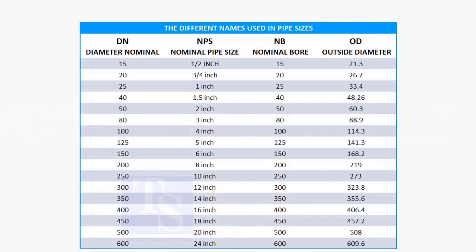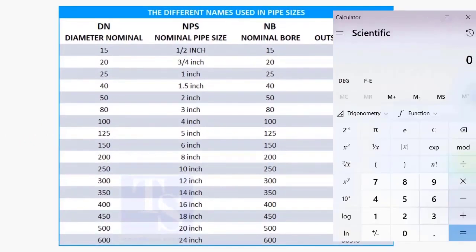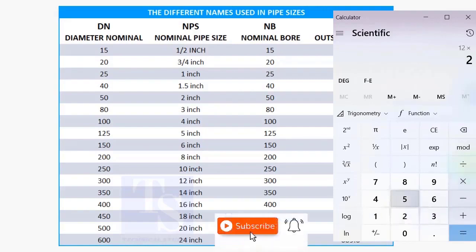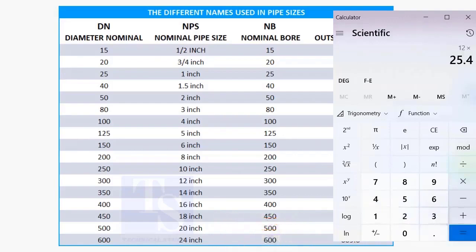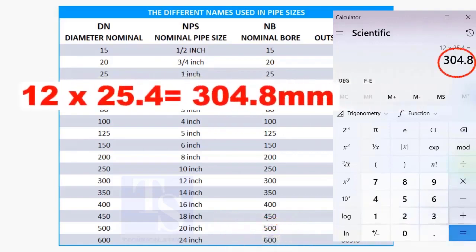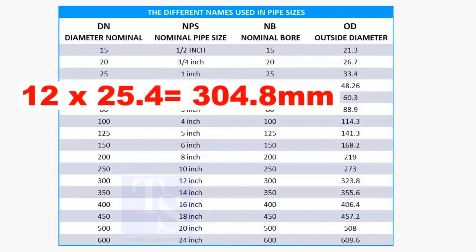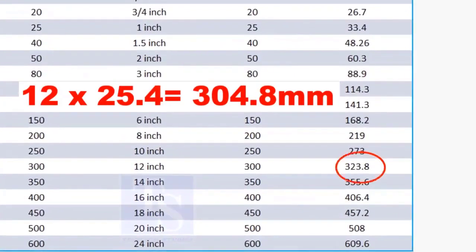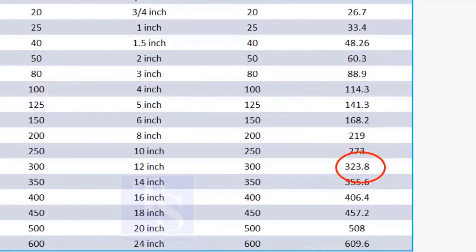Let us check this. To calculate the OD of the 12 inch pipe, multiply 12 by 25.4. The answer is 304.8 millimeters. But the actual size is 323.8 millimeters.